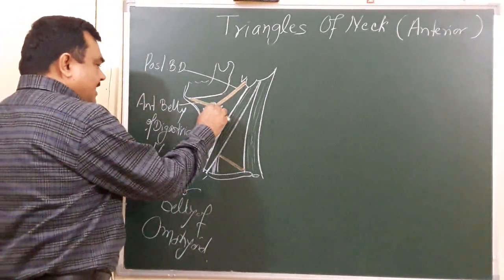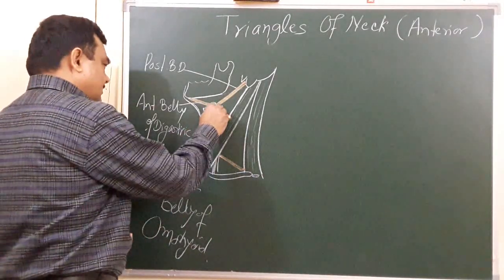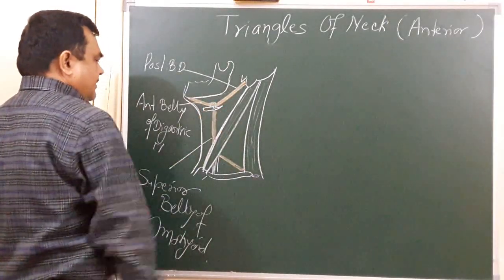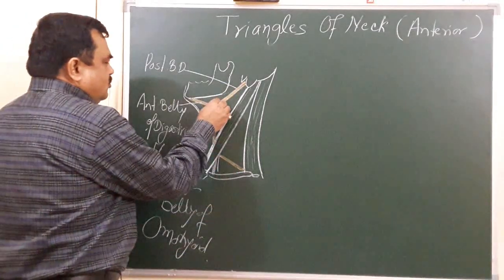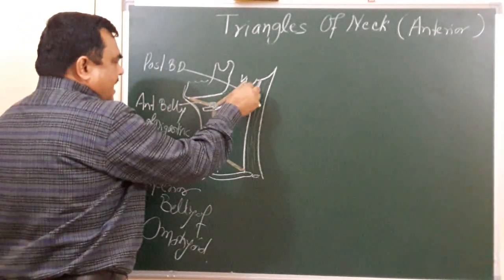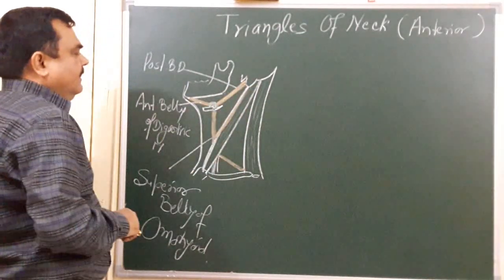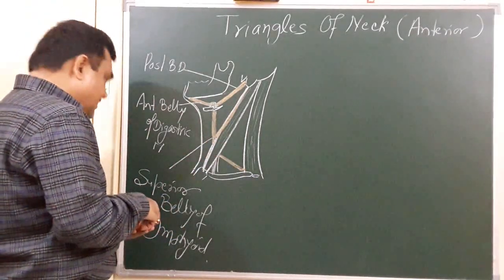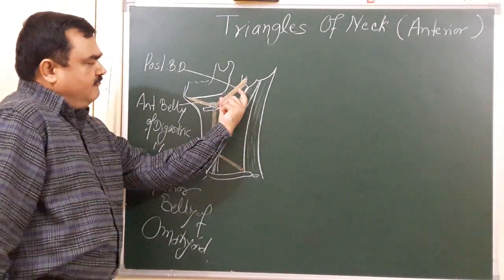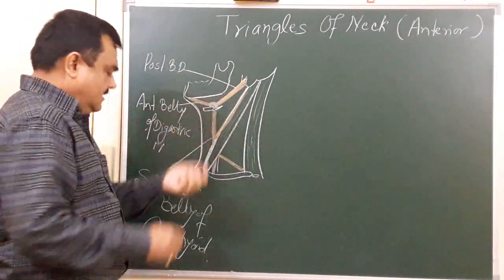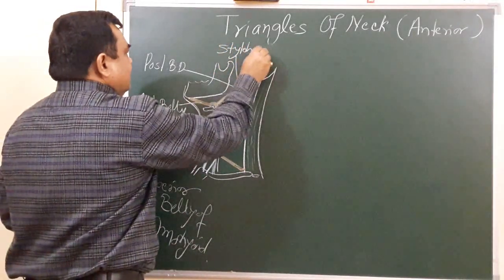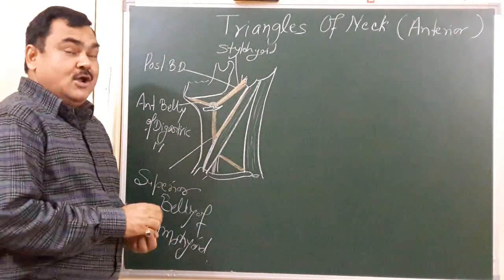The boundary of the carotid triangle: inferiorly it is bounded by the superior belly of the omohyoid, superiorly by the posterior belly of the digastric, and posteriorly by the anterior border of the sternocleidomastoid. Another muscle also present is the stylohyoid muscle, so the superior boundary is formed by the posterior belly of the digastric and the stylohyoid muscle.